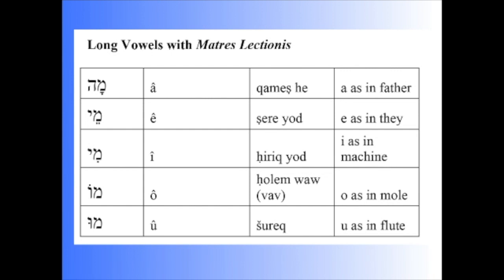The Shuruq is a little bit different. It consists of a Vav with a dot in the middle, and it is pronounced U as in 'flute.'